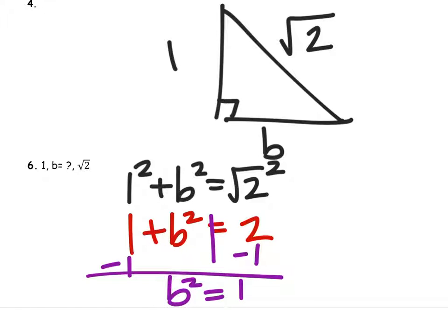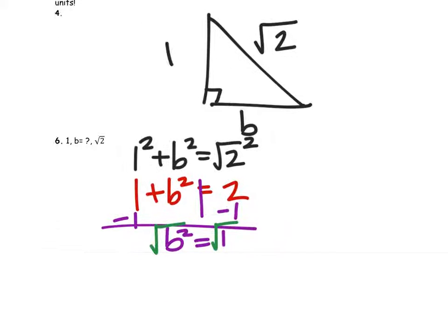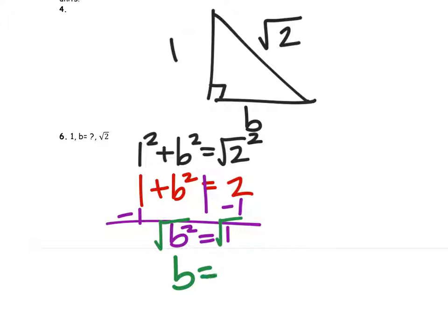Now to solve for B, we need to get rid of that square by square rooting both sides, and that tells us then that B equals one.